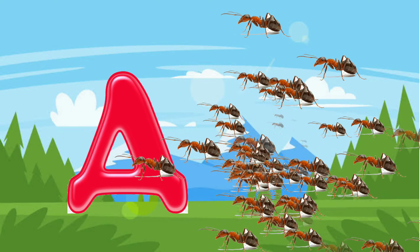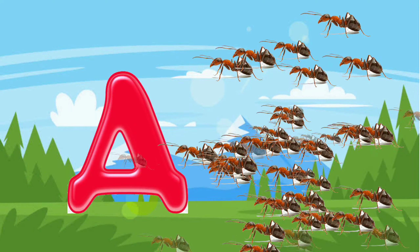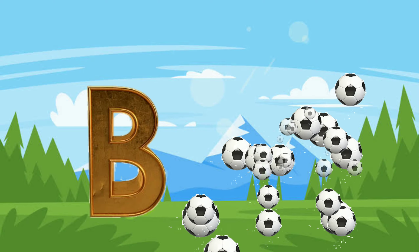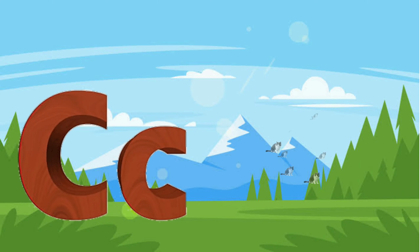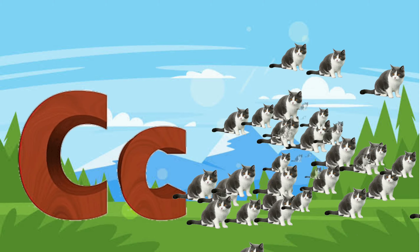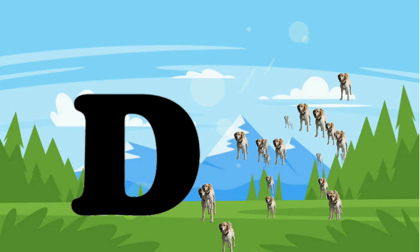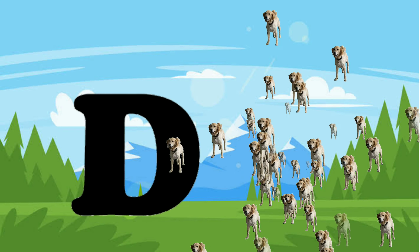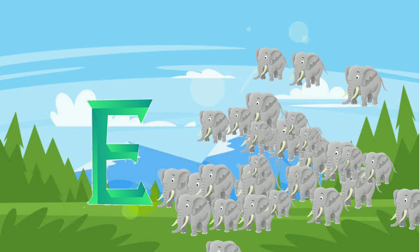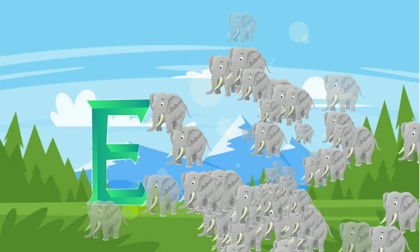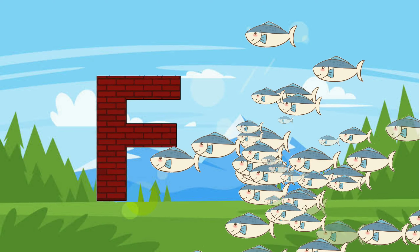A for ant, A for ant, B for ball, B for ball. C for cat, C for cat, D for dog, D for dog. E for elephant, E for elephant.